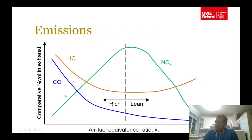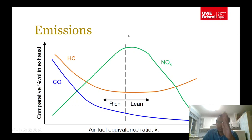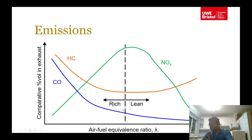On an emissions chart, the y-axis shows the comparative percentage volume in exhaust and the x-axis shows the equivalence ratio. The dotted line at lambda = 1 marks stoichiometric. NOx formation peaks just after lambda = 1, in slightly lean conditions. At that point hydrocarbons and CO are at relatively low levels, but going further lean, CO decreases while hydrocarbons may increase slightly.